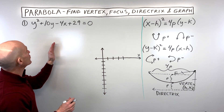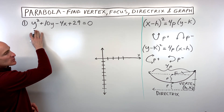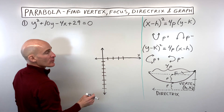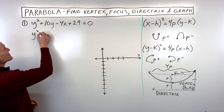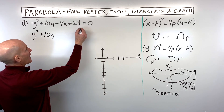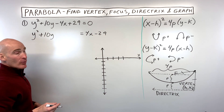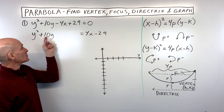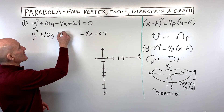Let's go through two examples. The first thing is to identify what type of form we have — is it a y-squared type or an x-squared type? This looks like a y-squared type, so that's the form we're trying to get it into. We get everything with a y on the left side, and move everything else to the right — add 4x, subtract 29. Now we complete the square: take half of b and square it. Half of 10 is 5, and 5 squared is 25.